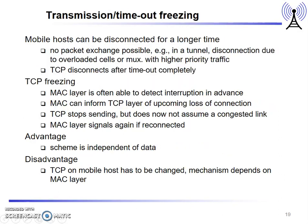The next optimized protocol is transmission or timeout freezing. Normally when mobile hosts get disconnected for a longer time, there won't be any packet exchange. This disconnection may be due to overloading of cells or multiplexing with higher priority traffic. In this case, TCP connections have to time out completely. To overcome this, we can use TCP freezing.